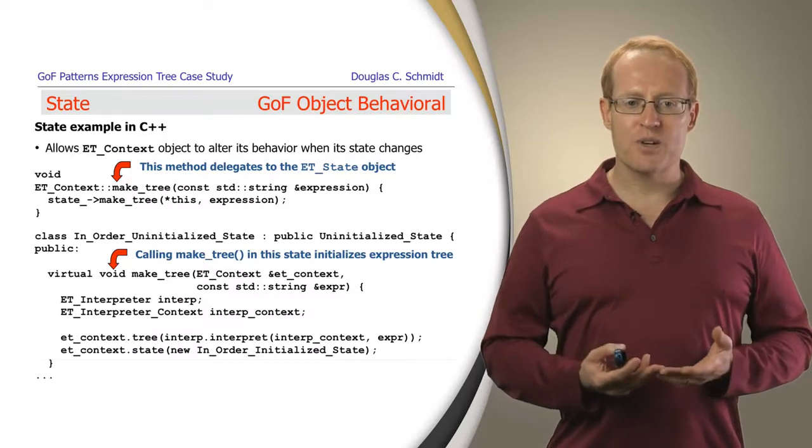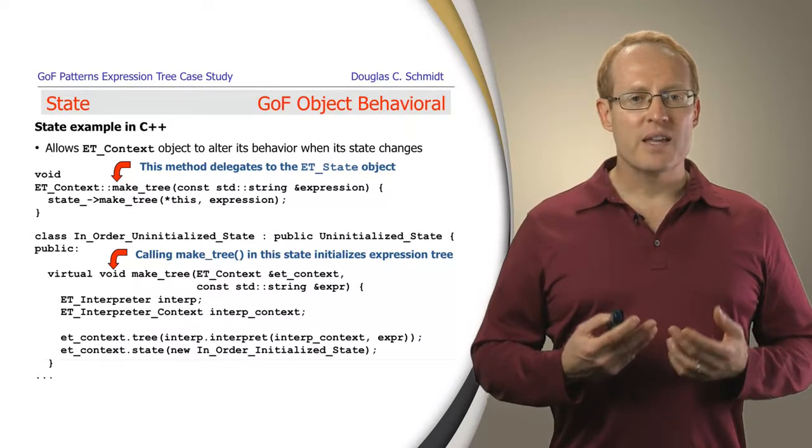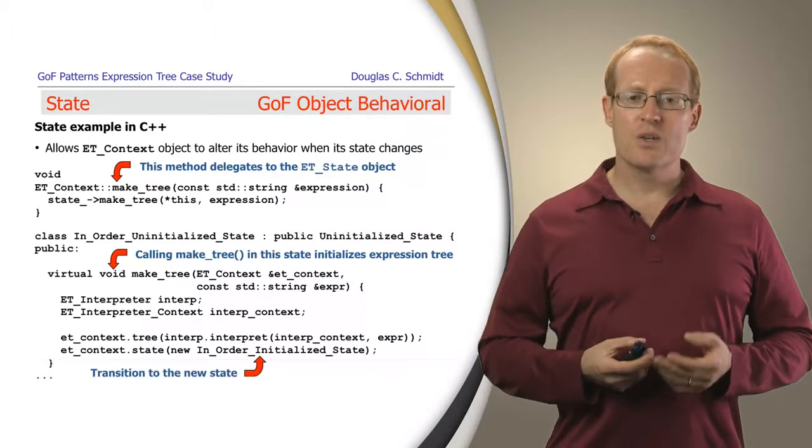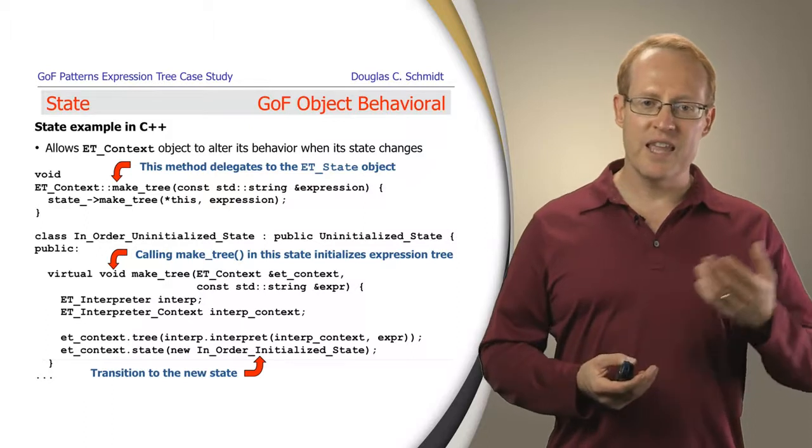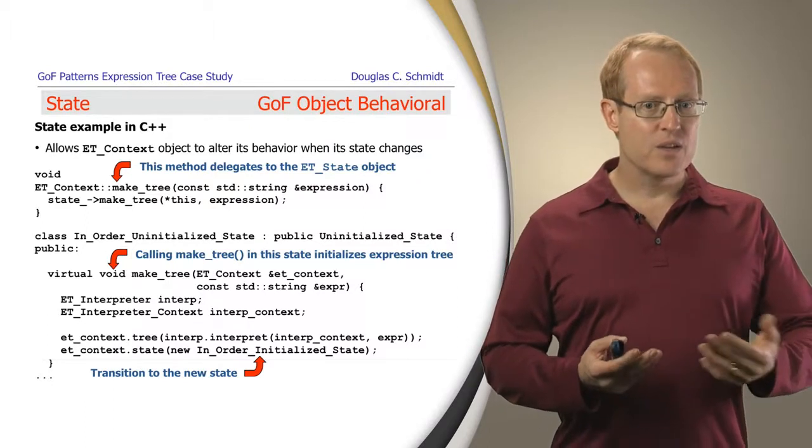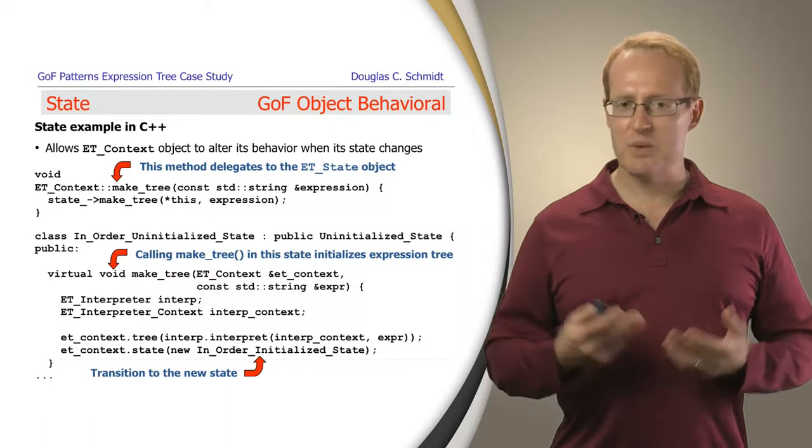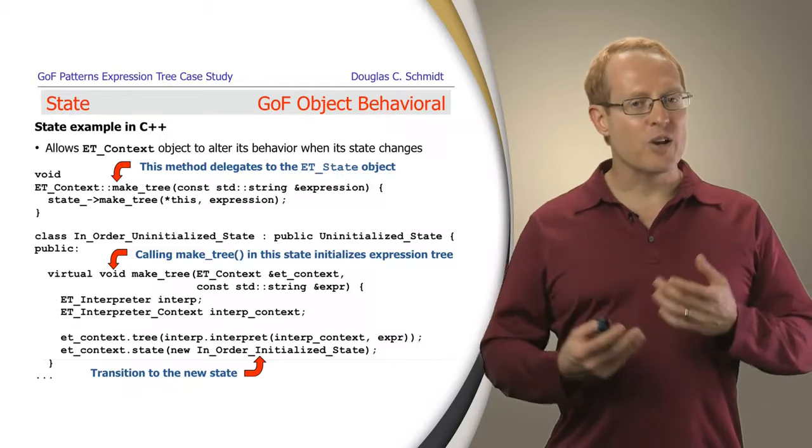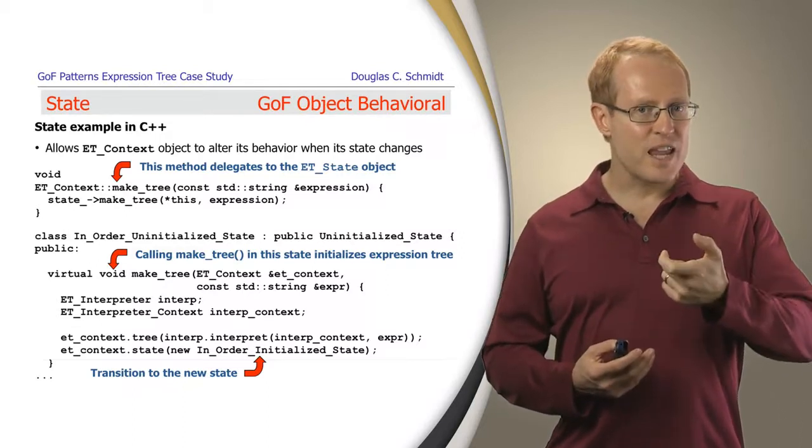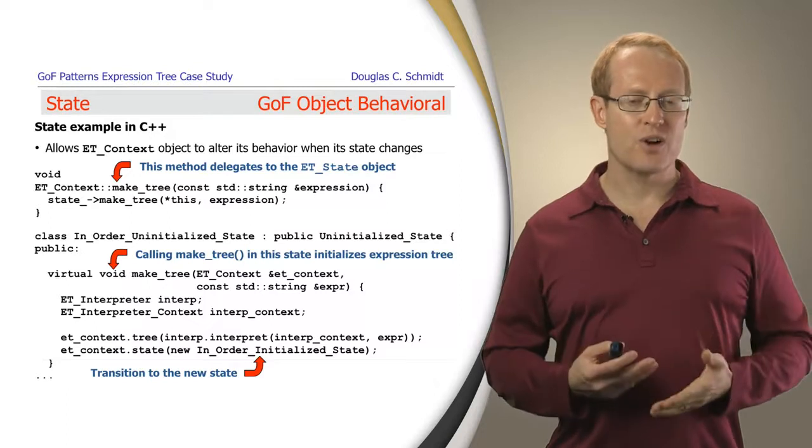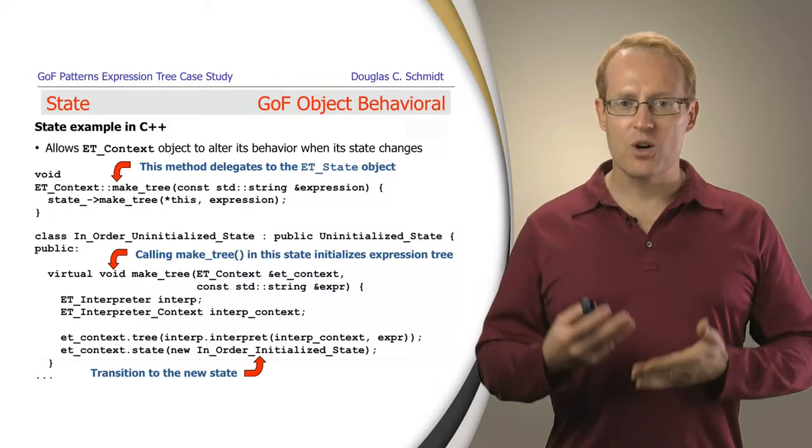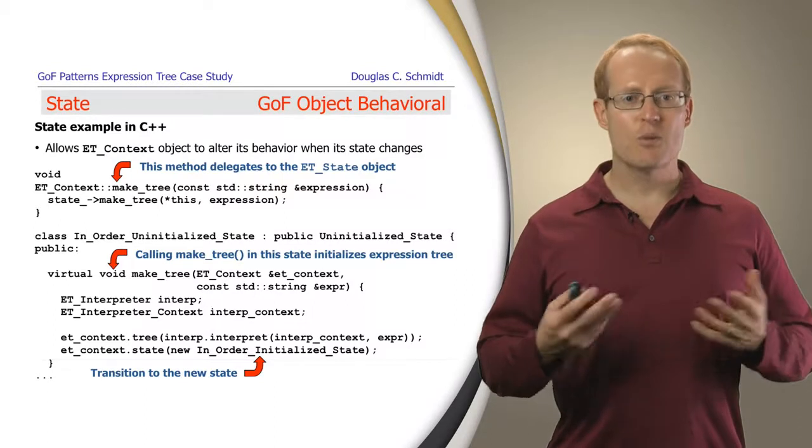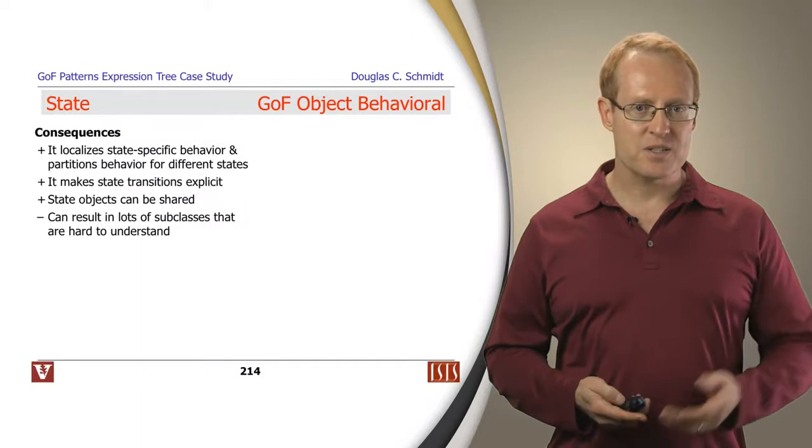And what you'll see in this particular case when this happens is that the state will then change. If you take a look at the very bottom of this slide you'll see that we transition from being in the inorder uninitialized state to the inorder initialized state which means that we now have an expression tree that corresponds to the expression that was taken in there. So the main thing to remember here is that depending on the state when the context makeTree method is called different things are going to happen. And yet the interface to the outside to the application client remains unchanged. It's the internals that change as the state evolves.